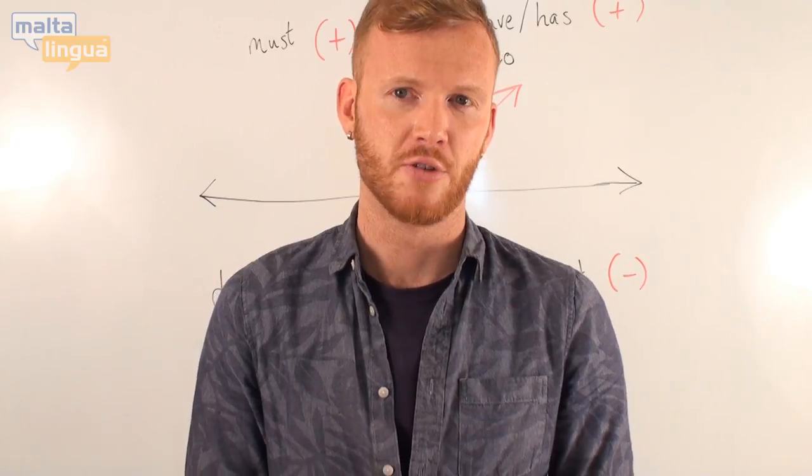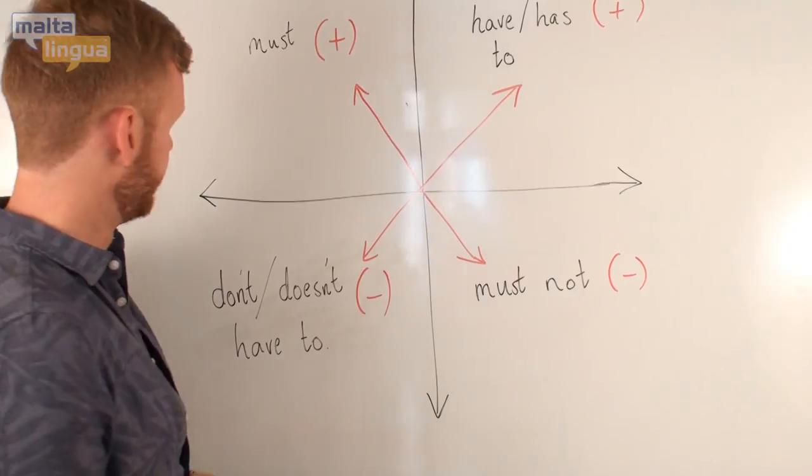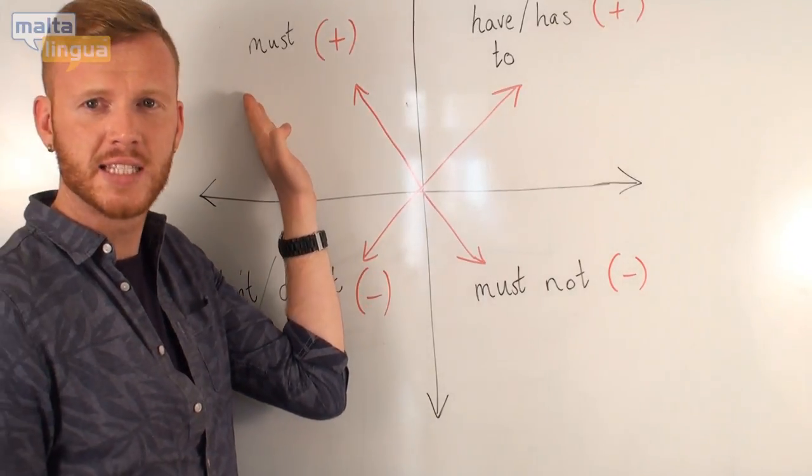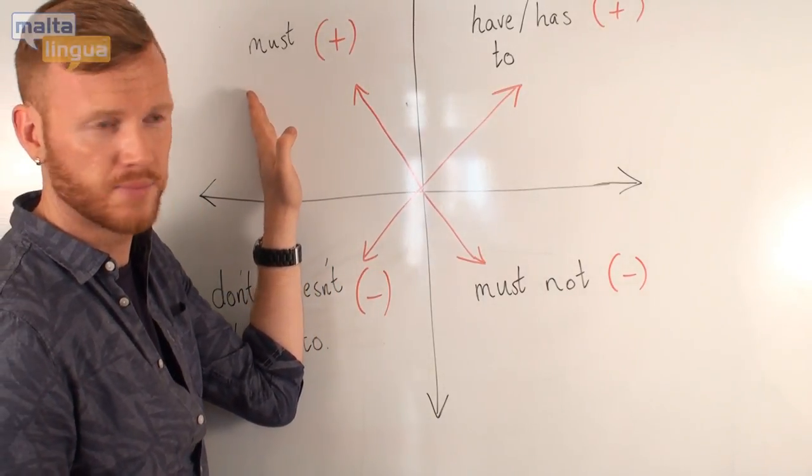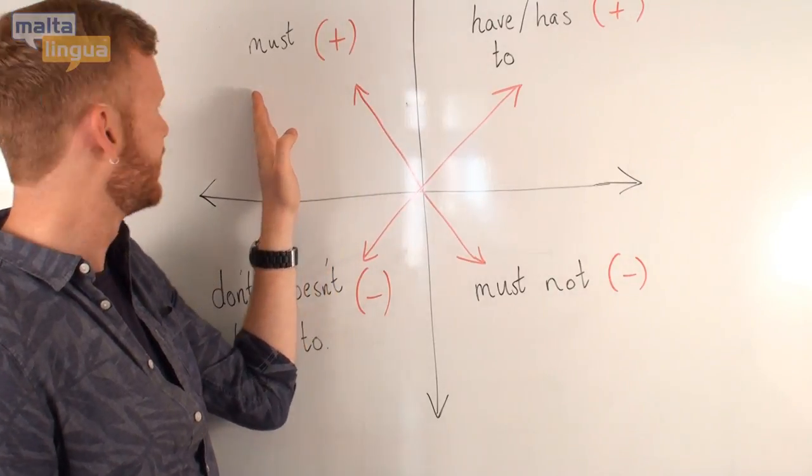For example, if it is a rule. If you look at the chart which I have drawn behind me on the board, in a positive sentence we use must. You must learn English, for example.